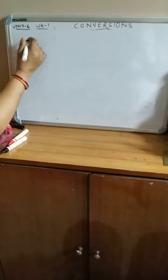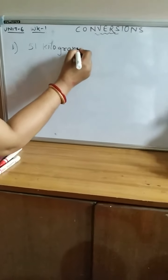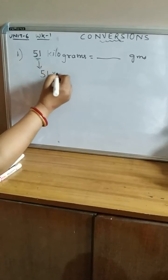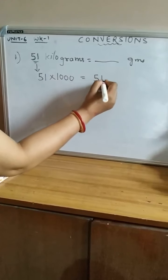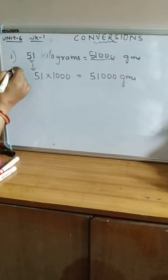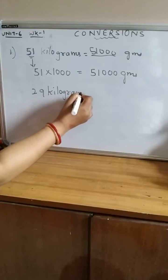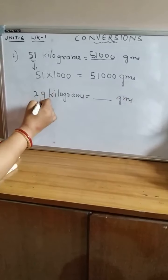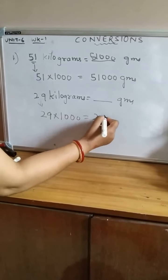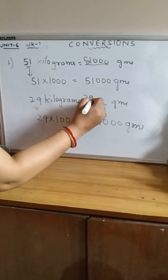Another example: 51 kilograms equals how many grams? The number of kilograms, that is 51, will be multiplied by 1000, giving 51,000 grams. Now another example: 29 kilograms. The number of kilograms, that is 29, will be multiplied by 1000, giving 29,000 grams. So 29 kilograms equals 29,000 grams.